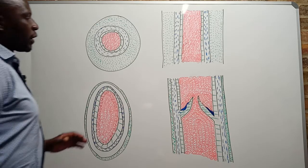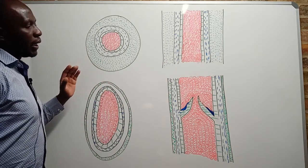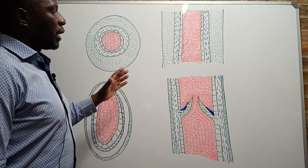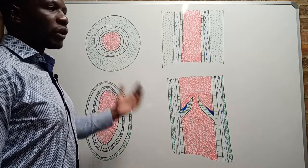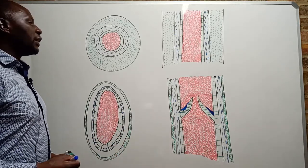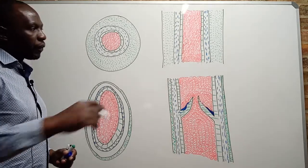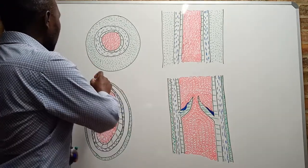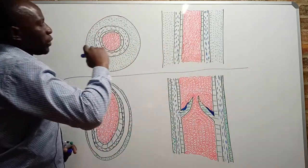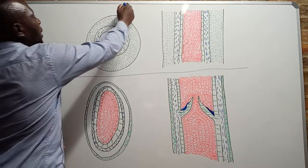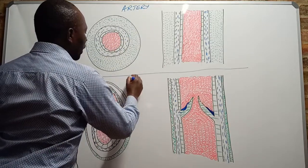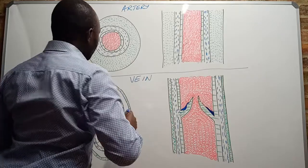There are mainly two sets of vessels that carry blood around our body, and these are arteries and veins. The four diagrams that you see here are actually two diagrams. The top two diagrams represent an artery, and the bottom two diagrams represent a vein.